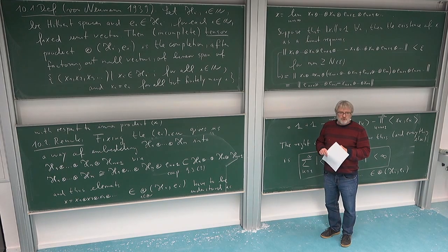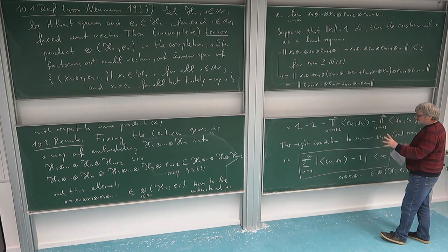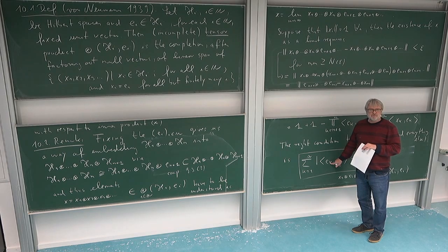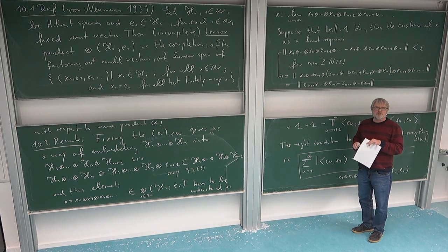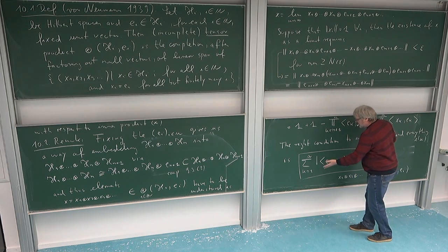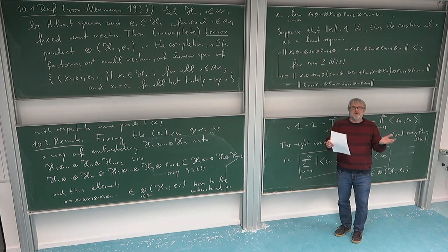Now we should see how our choice of tensor product depends on the choice of the e_k's. We have here many infinite tensor products — not just one, but one for each choice of the e's — and the question is: are they in some sense the same, or are they different? Can we control when they are different?